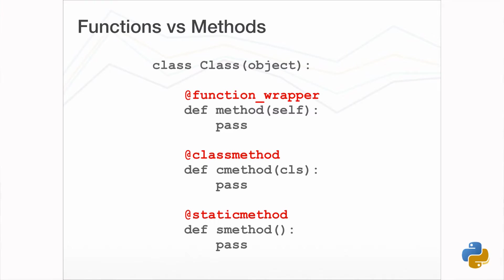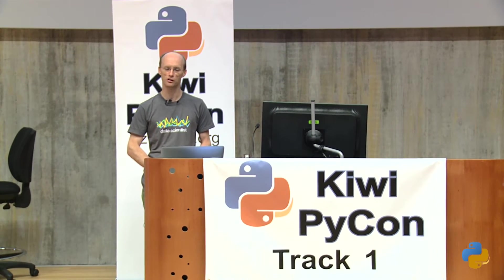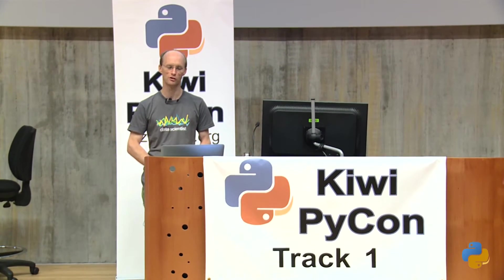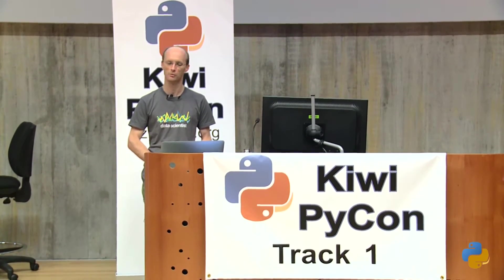As well as normal functions, decorators can also be applied to methods of classes. Python even includes a couple of special decorators called classmethod and staticmethod for converting normal instance methods into these special method types.